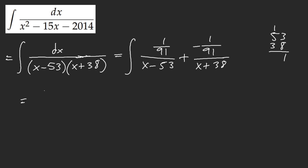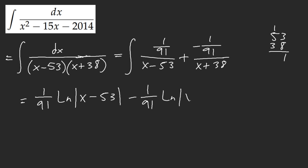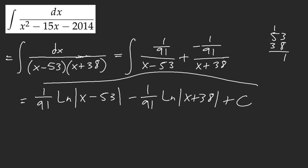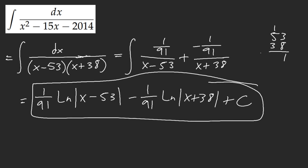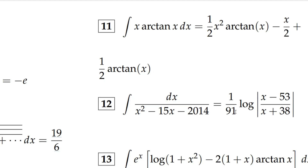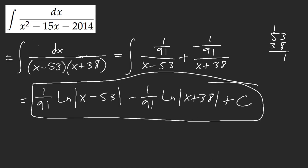So it seems that we have (1/91) ln|x − 53| minus (1/91) ln|x + 38|, plus C. So it seems like this is our answer. This is very horrid. Let me actually check my answer — yep, 1 over 91. Yep. Okay.